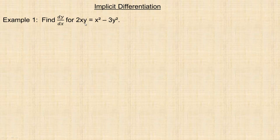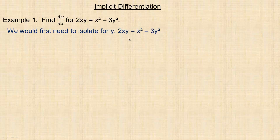Let's try to find dy/dx by differentiating. Initially, if you didn't know implicit differentiation, you'd try to rearrange the equation to get y alone. So first we would need to isolate for y. I want to get the y terms together, so I want the negative 3y squared on the left, so I would add 3y squared to both sides.